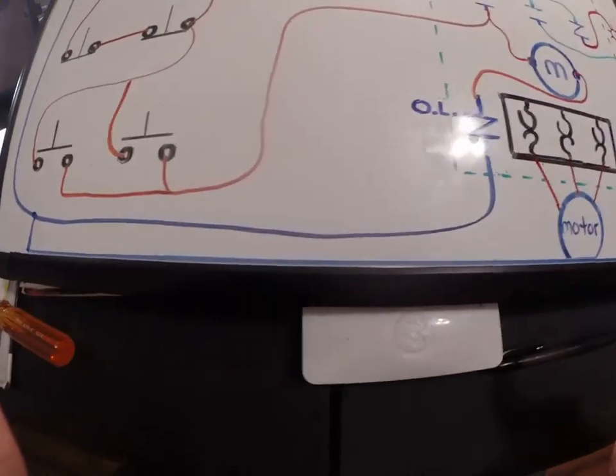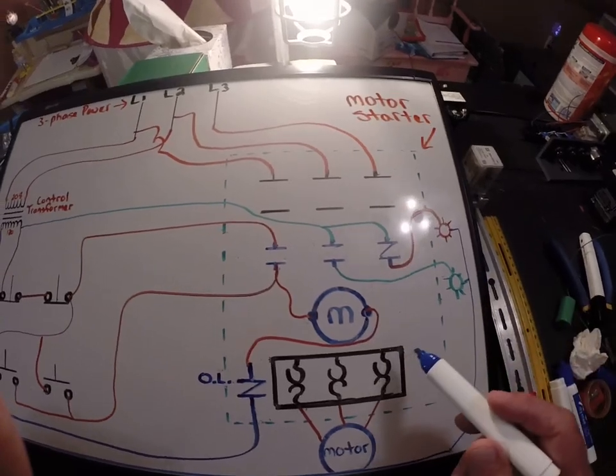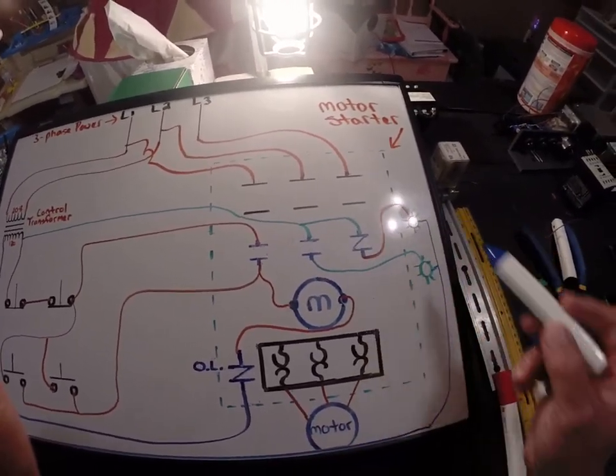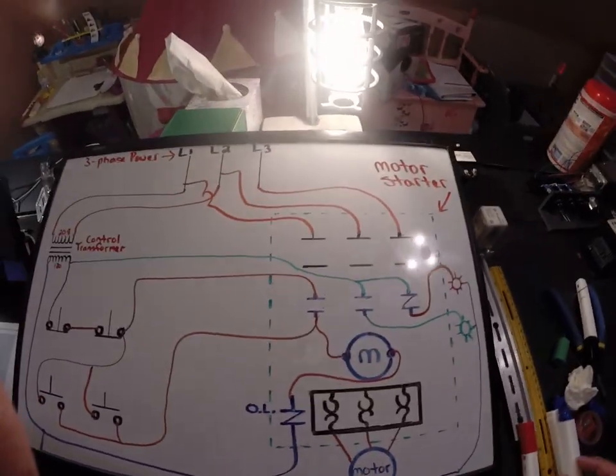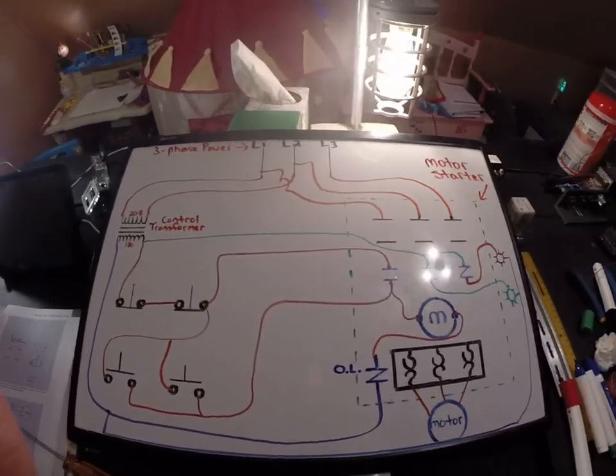Because there's our neutrals for our overload. So you clearly see this closes green light, we hit stop, goes back to normally closed, red lights on to indicate that it's not running. That's what you got to do today except you got to do it neat. All right, thanks guys.